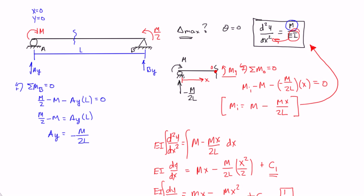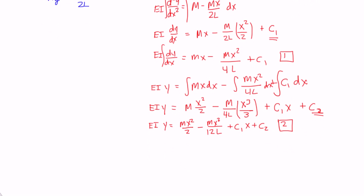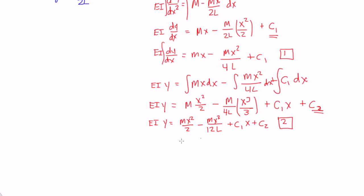So let's look here at equation 2. If I said x is equal to 0 and y is equal to 0, at x or the distance is equal to 0, the deflection, the y, is equal to 0. This term becomes 0, this term becomes 0, this term becomes 0, and this becomes 0.